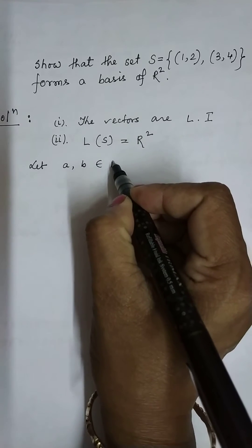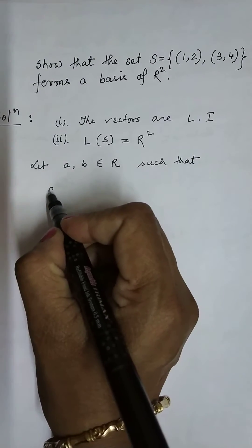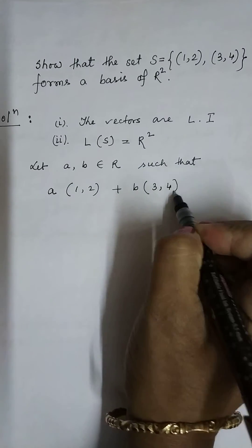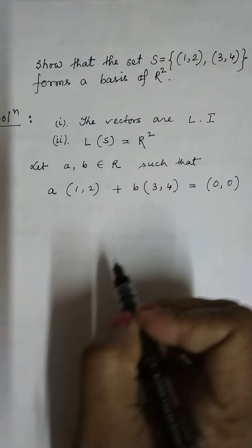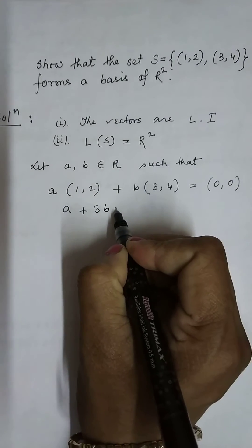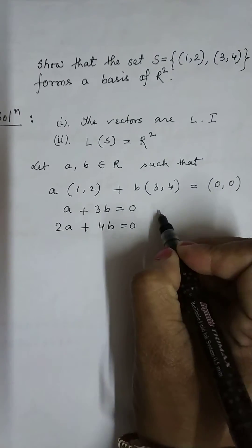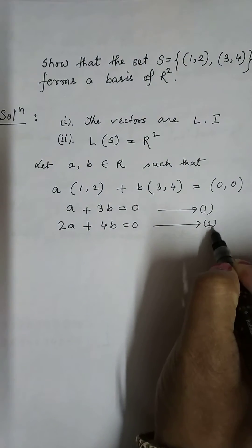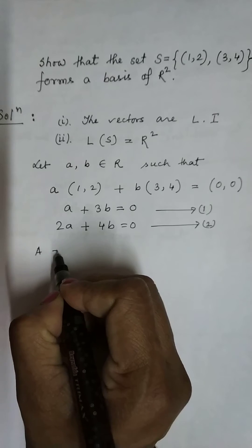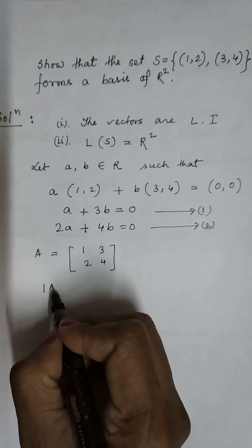To show the vectors are linearly independent, let a and b be two scalars belonging to R such that a(1,2) + b(3,4) equals the null vector. This gives us: a + 3b = 0 and 2a + 4b = 0 as equations 1 and 2 — linear homogeneous equations with coefficient matrix A = [[1,3],[2,4]].